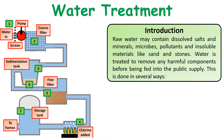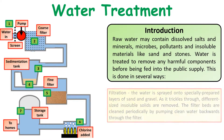Raw water may contain dissolved salts, minerals, microbes, pollutants, and insoluble materials such as sand and stone. Water is treated to remove any harmful components. This can be done in several ways.